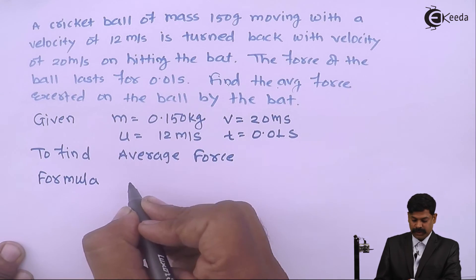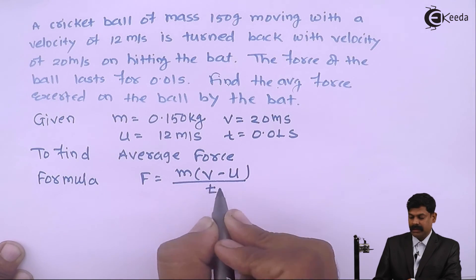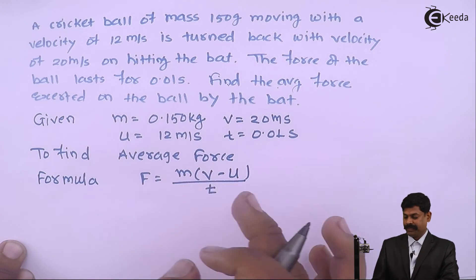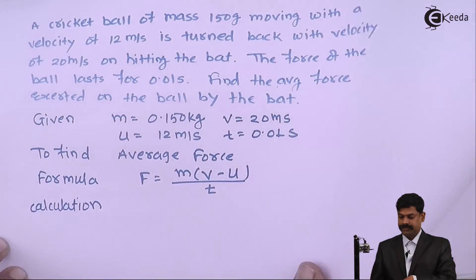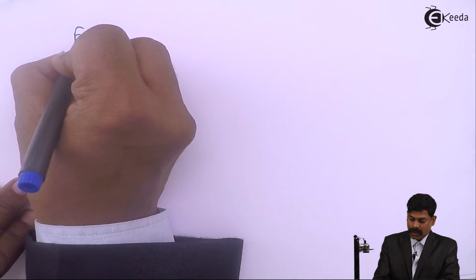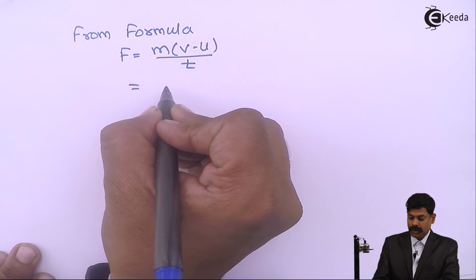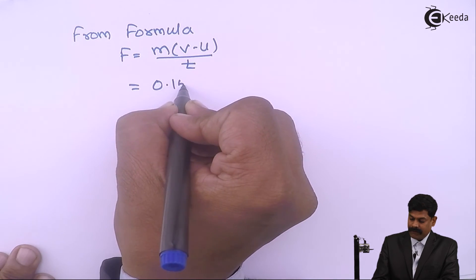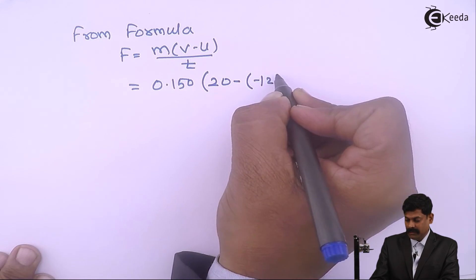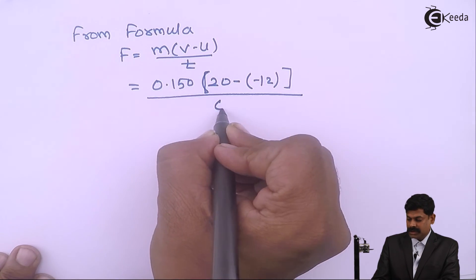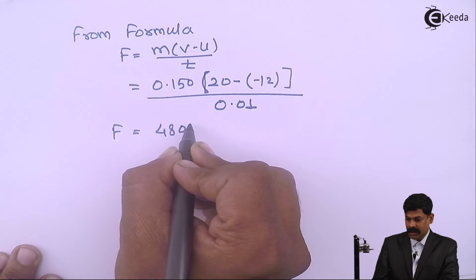To calculate average force: F equals mass into (v minus u) divided by t, where m is mass, v is final velocity, u is initial velocity, and t is time. Putting all values: mass is 0.150 kg, final velocity is 20, minus initial velocity 12, divided by time 0.01 second. We get 480 newton.